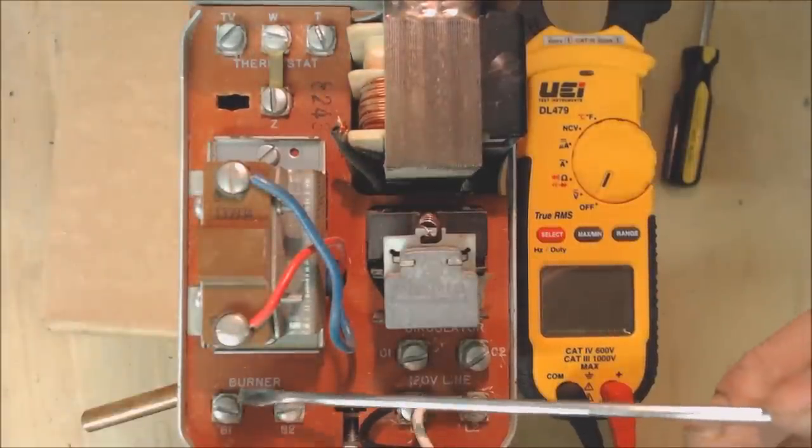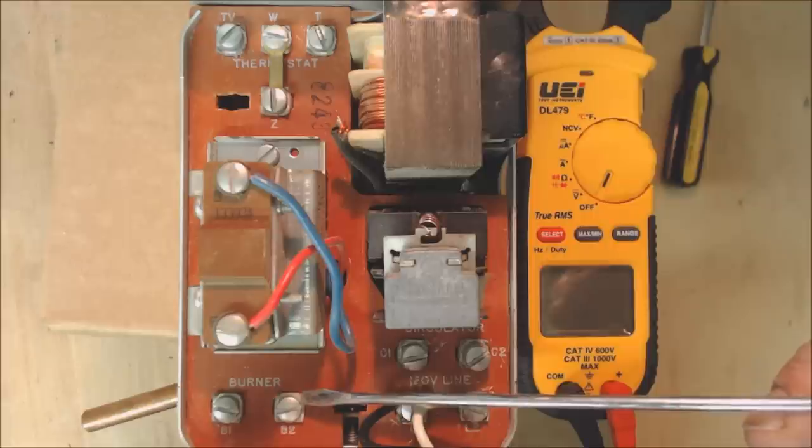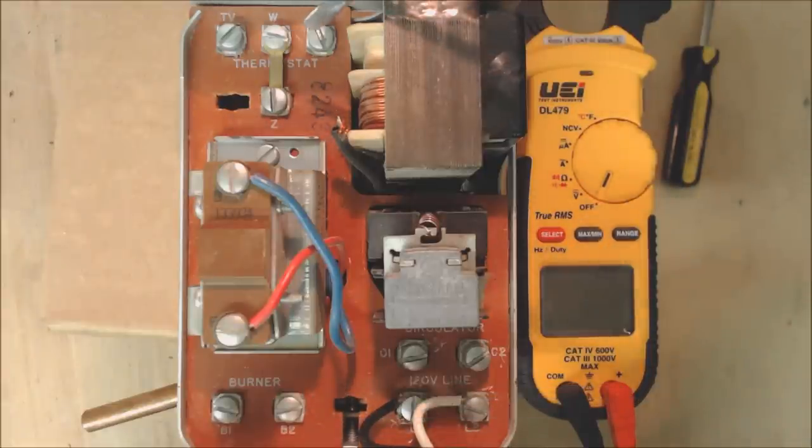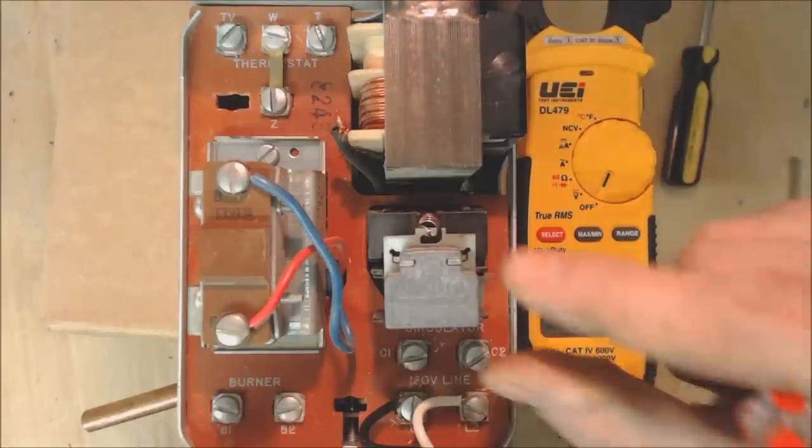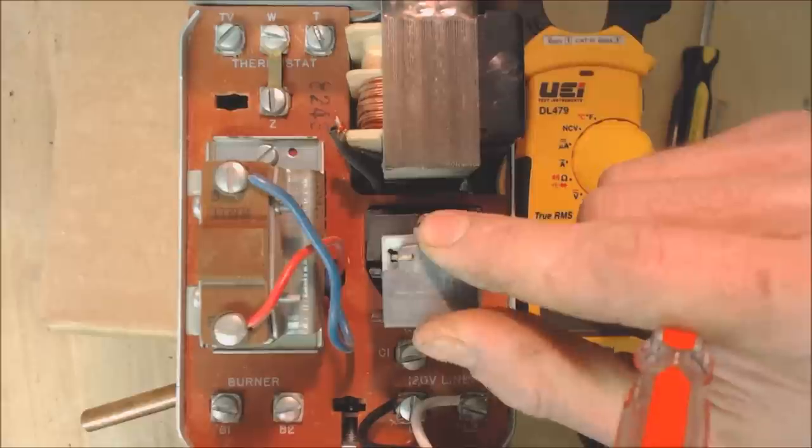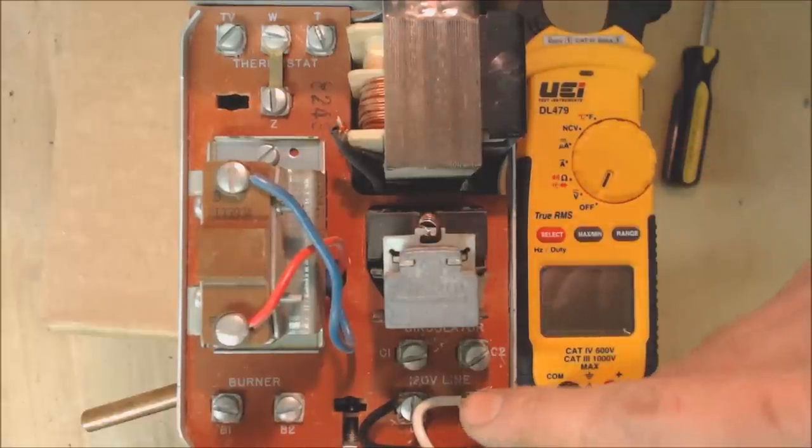B1 will be your hot 24 volt hot and B2 will be your common, but only when your thermostat is calling. What happens when your thermostat calls is this relay sucks down. I'm going to show you how that works, so I'm going to go ahead and power this.